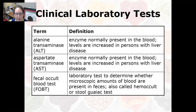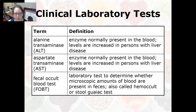We have alanine transaminase, that's ALT. It is an enzyme that's normally present in the blood; levels are increased in persons with liver disease. For example, hepatitis can cause an increase in ALT. Aspartate transaminase is AST, and it's an enzyme that is also normally present in the blood, with levels increased in persons with liver disease as well.